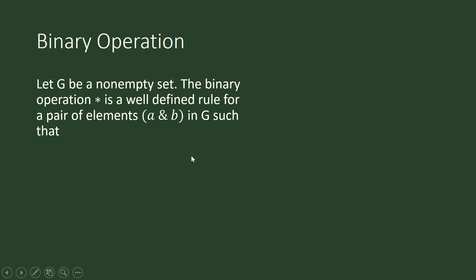So what is a binary operation? Let G be a non-empty set. The binary operation star is a well-defined rule for a pair of elements a, b in G such that a star b is an element of G. In other books, this is written using mathematical symbols as G cross G mapping to an element of G.